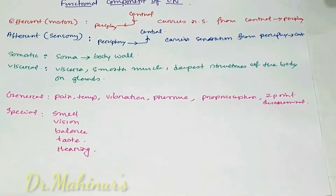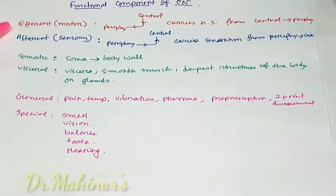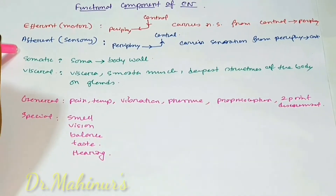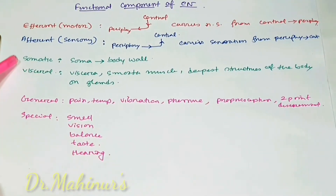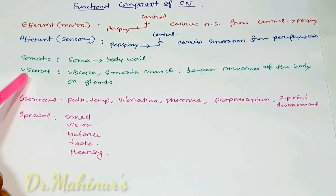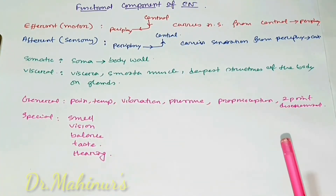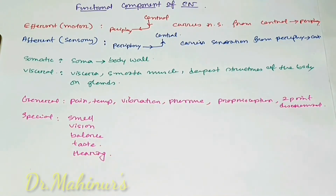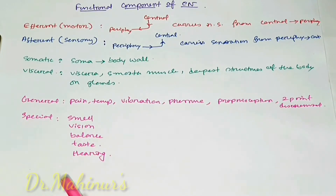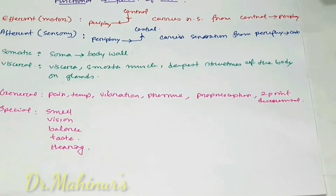When a cranial nerve fiber carries special sensations, we say that it has a special component. So to summarize all six terms: efferent or motor carries signals from central to periphery; afferent or sensory carries sensation from periphery to central; somatic is when it gives nerve supply to the body wall; visceral is when it supplies smooth muscle, deepest structures, or glands; general covers general sensations; and special covers smell, vision, balance, taste, and hearing.